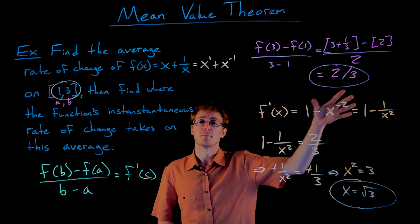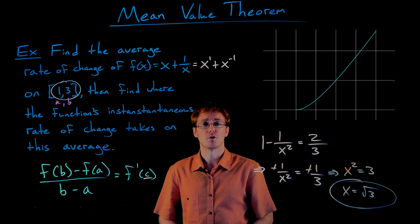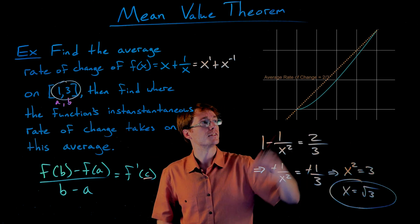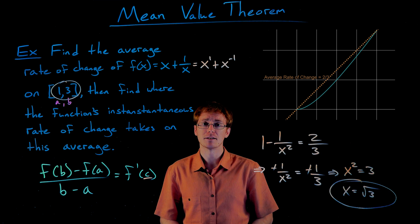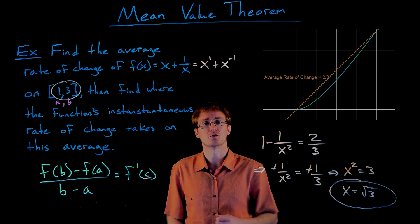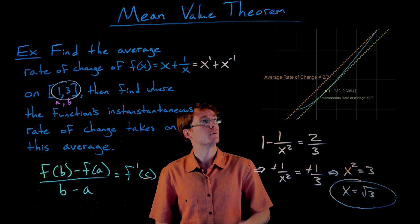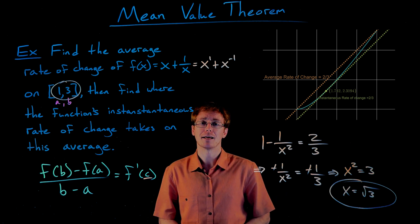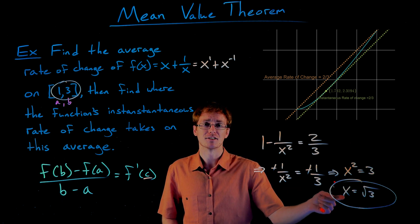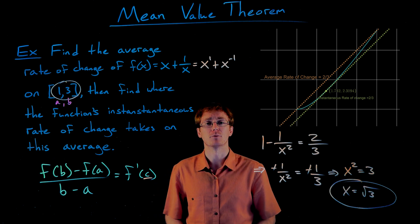We can graph f(x) = x + 1/x on our interval from 1 to 3, visualize the secant line connecting the endpoints and observe its slope. Then we go to the point where x = √3 and graph the tangent line at that point. We should see that the secant and tangent lines are parallel — their slopes are equal — because at x = √3 the instantaneous rate of change equals the average rate of change.